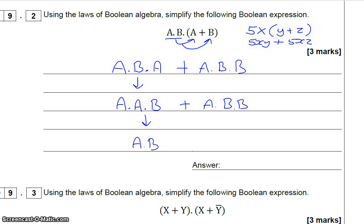And B and B is just the same as B, so this becomes A and B. And we know that A and B, or A and B, is just the same as A and B. And so therefore that shows the simplification.